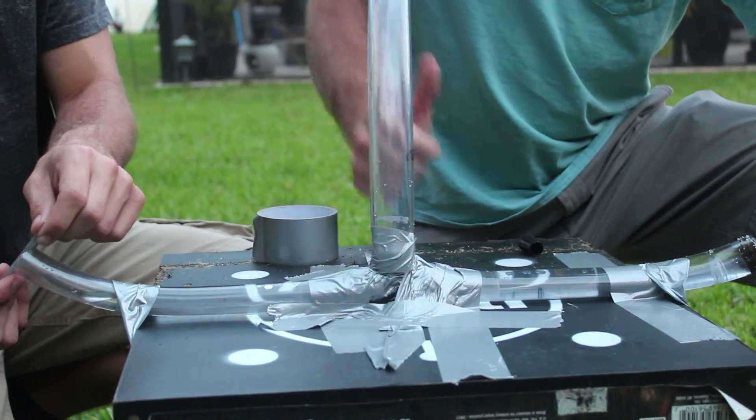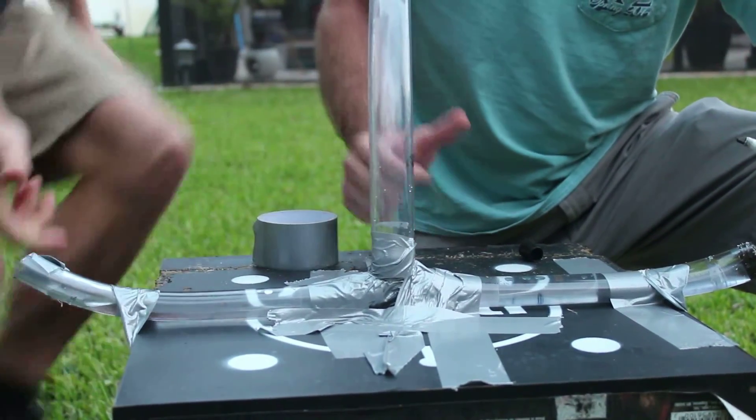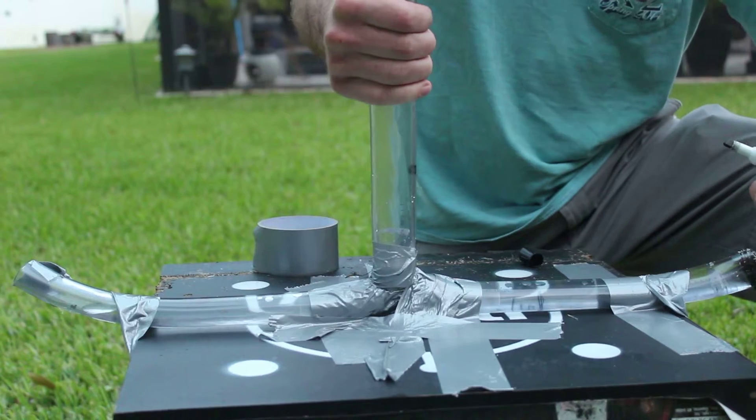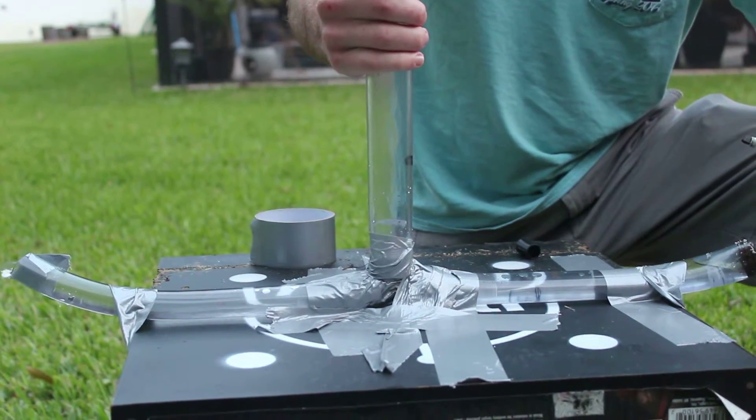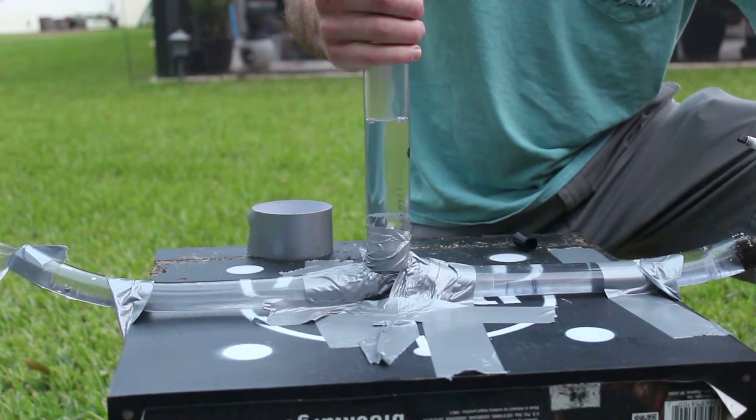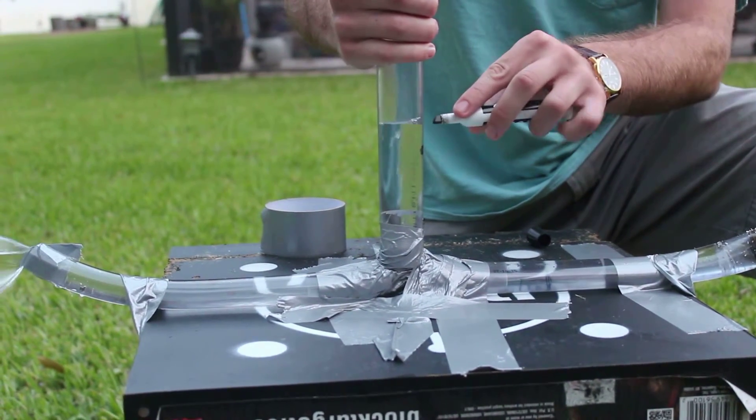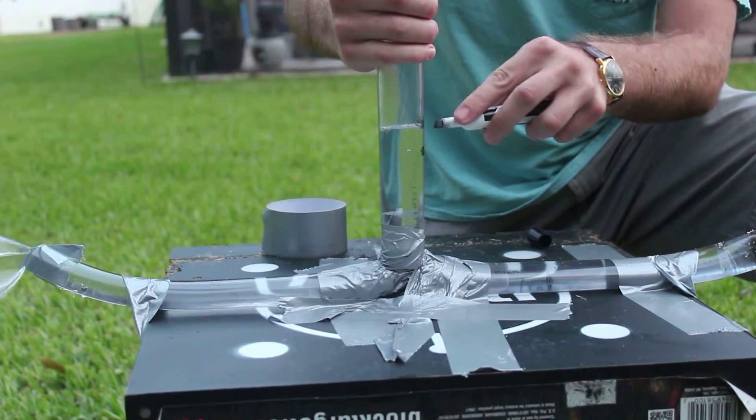In this part, we covered the hole three-fourths of the way to increase the pressure even more. Once we turn the water on, notice how it goes past our line and stays at that height. We then shut the water off and mark the spot.